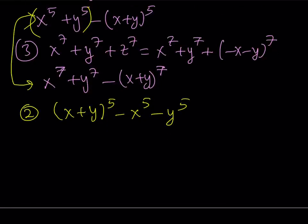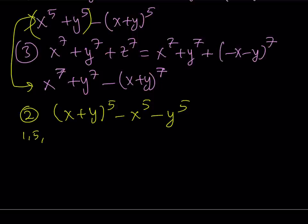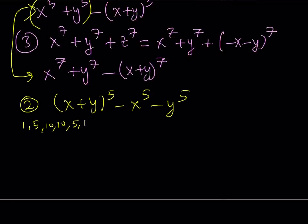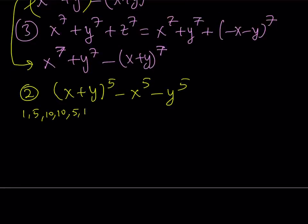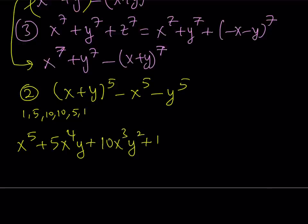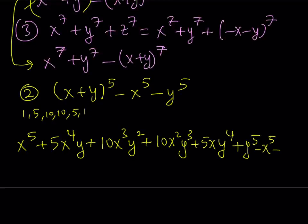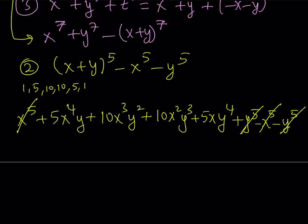We're going to use the binomial theorem for x plus y to the fifth power. The coefficients are 1, 5, 10, 10, 5, and 1 — these come from 5 choose 0, 5 choose 1, 5 choose 2, and so on. So it gives: x to the fifth plus 5x to the fourth y plus 10x cubed y squared plus 10x squared y cubed plus 5xy to the fourth plus y to the fifth. From this, I subtract x to the fifth and y to the fifth, and these terms cancel out.